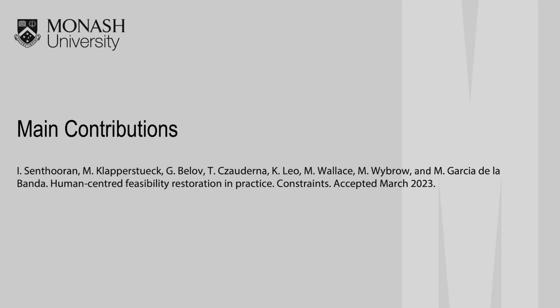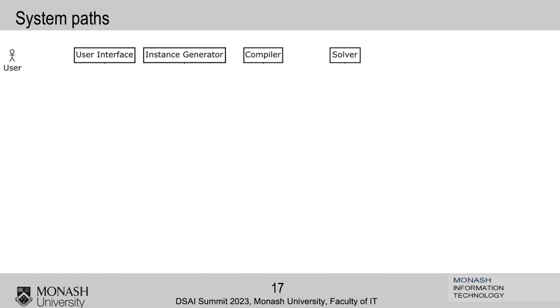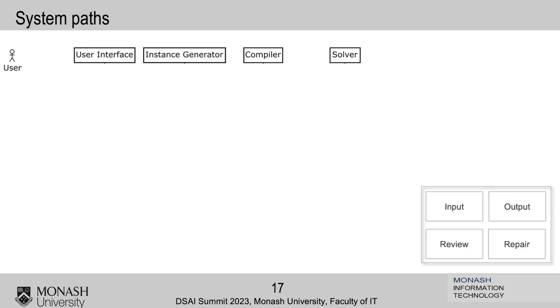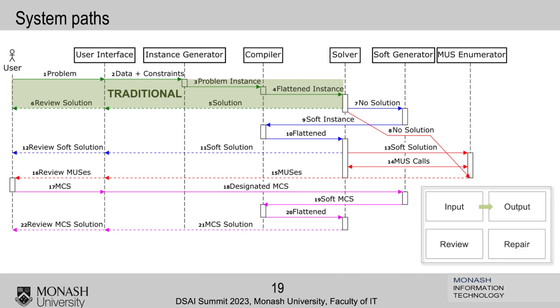The main contributions are in the paper, which is almost about to be published online. I'll give a high-level flavor. Remember: user interface → instance generation → compiler → solver. What we wanted is the user to go from input to output, or review and repair. The first, normal path is: you give everything, everything goes well, you get a solution. Or, we have built an enormous amount of infrastructure to do four main things.